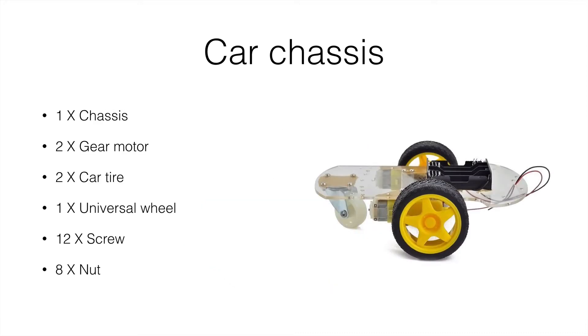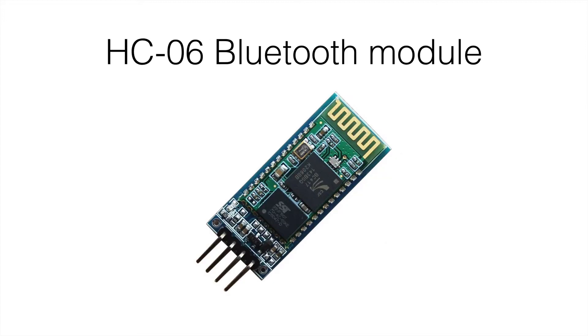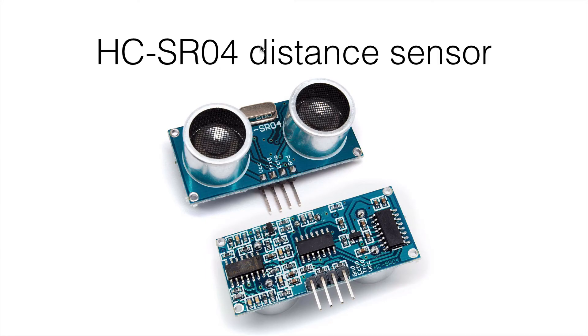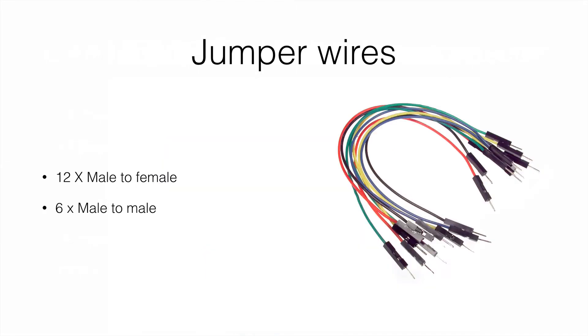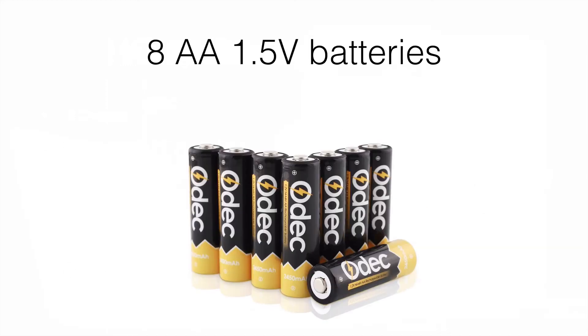The car chassis includes one car chassis, two gear motors, two car tires, one universal wheel, 12 screws, and eight nuts. You'll also need an HC-06 Bluetooth module, HC-SR04 distance sensor, 12 male-to-female and 6 male-to-male jumper wires, and 8 AA 1.5-volt batteries.